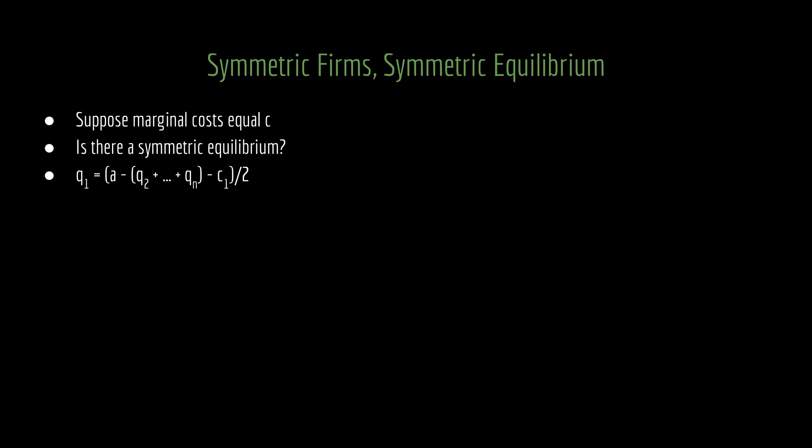If we do that, let's think about firm one's best response function and see how that converts to the more symmetric setting, where instead of having each firm producing a different quantity, q1, q2, q3, and so forth, imagine that they are all trying to produce the same quantity. So instead of having it q in the subscript, we'll just have a general value of q. And instead of having a c1, we'll just have a c. Then we have a generic best response function that looks like this. This is not just firm one's best response function. This is also firm two's and firm three's and so forth.